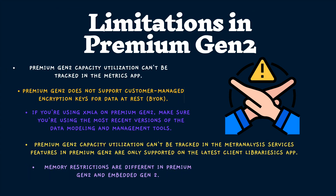Now let's discuss the limitations in Premium Gen 2. The first is that Premium Gen 2 capacity utilization cannot be tracked in the metrics app. The metrics app is part of the Power BI admin portal where you can navigate to see all metrics related to your Power BI service — and Premium Gen 2 capacity utilization cannot be tracked there. Also, Premium Gen 2 does not support customer-managed encryption keys for data at rest. I'll provide a link in the description for more details.